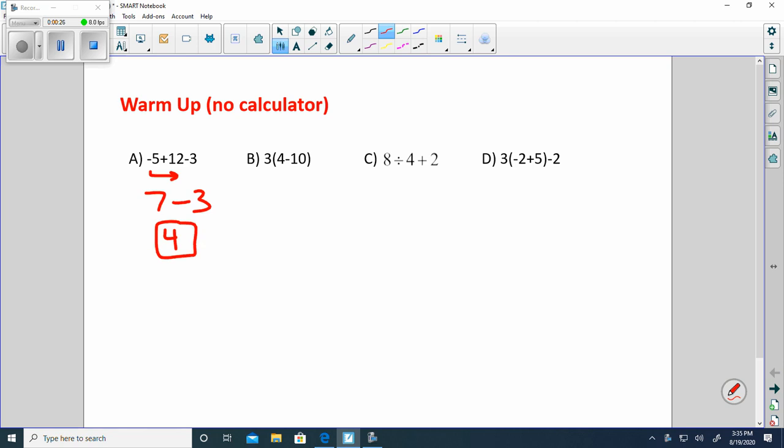Go ahead and try this next problem. Take care of what's inside the parentheses. 4 subtract 10. You have $4, you want to buy something that costs $10, that's negative 6. 3 times negative 6 is negative 18.